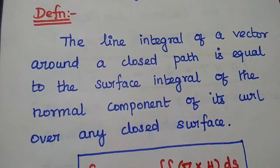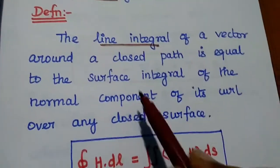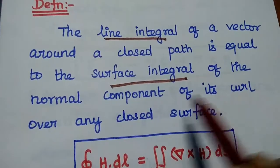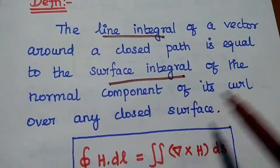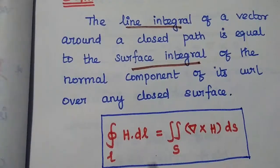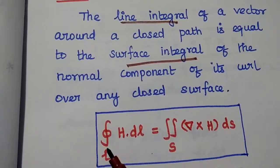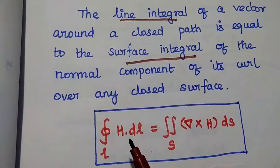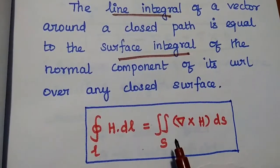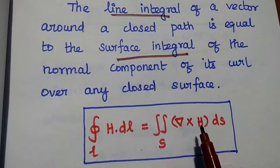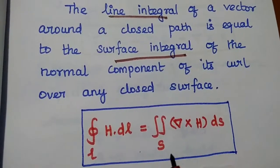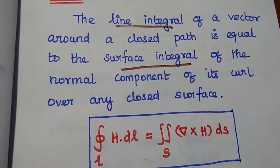So here it relates two things: one is line integral, another one is surface integral — the surface integral of the curl of the vector over any closed surface. Stokes theorem can be expressed as: the line integral of any vector H dot DL is equal to the surface integral of the curl of that vector.